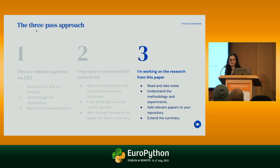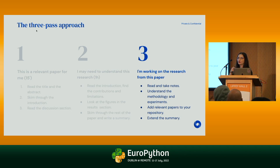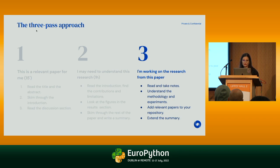The third pass is when you properly need multiple cups of coffee and sit and read it cover to cover. There's no shortcut here. You need to read it properly. But you don't need to read it alone — find help, find colleagues. Asking for help is a sign of strength, not weakness. When reading cover to cover, I also add new papers to the repository so I know where to follow the lead. At that point, you write an extended summary — you have a way better idea of what you're going to talk about.